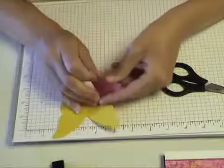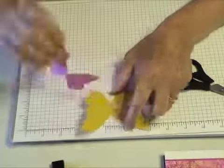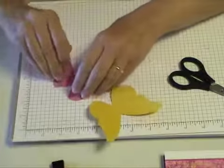So I'm going to take the two butterflies and just put a little bit of glue in between them to hold them together. Just using some snail adhesive on that.